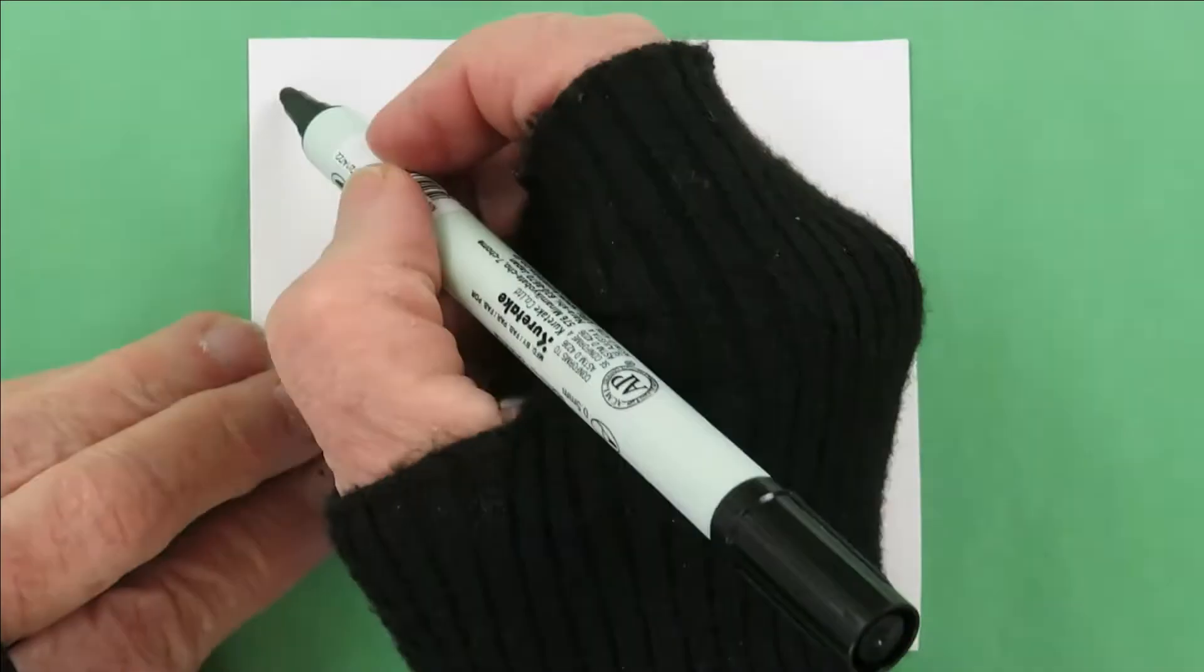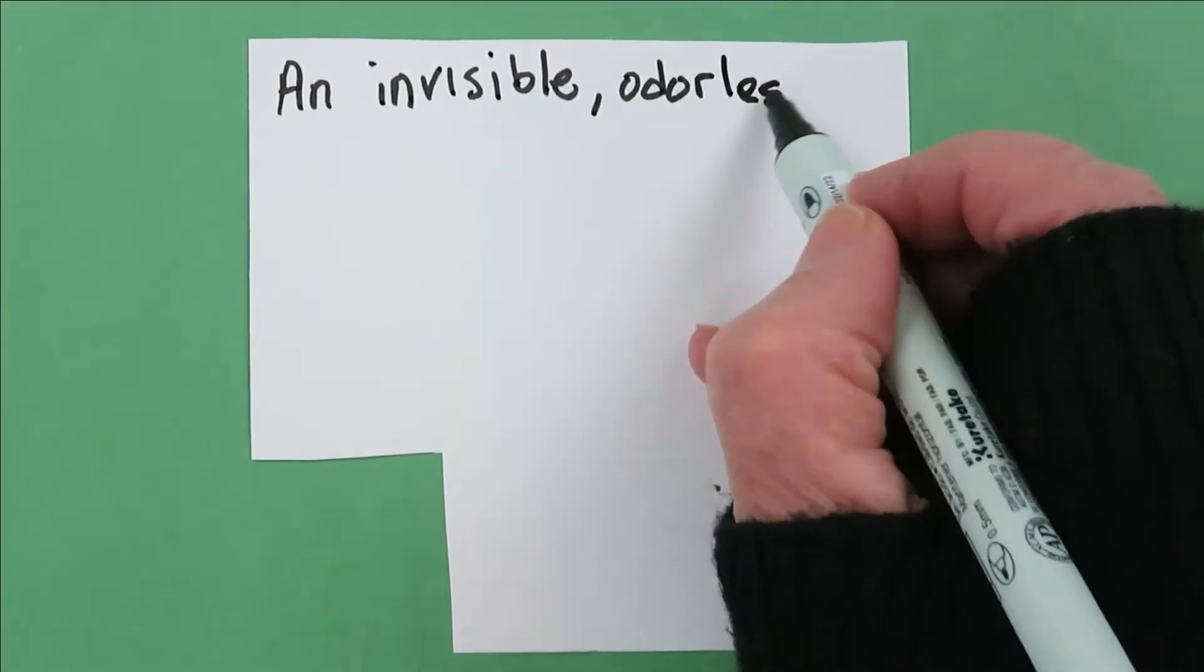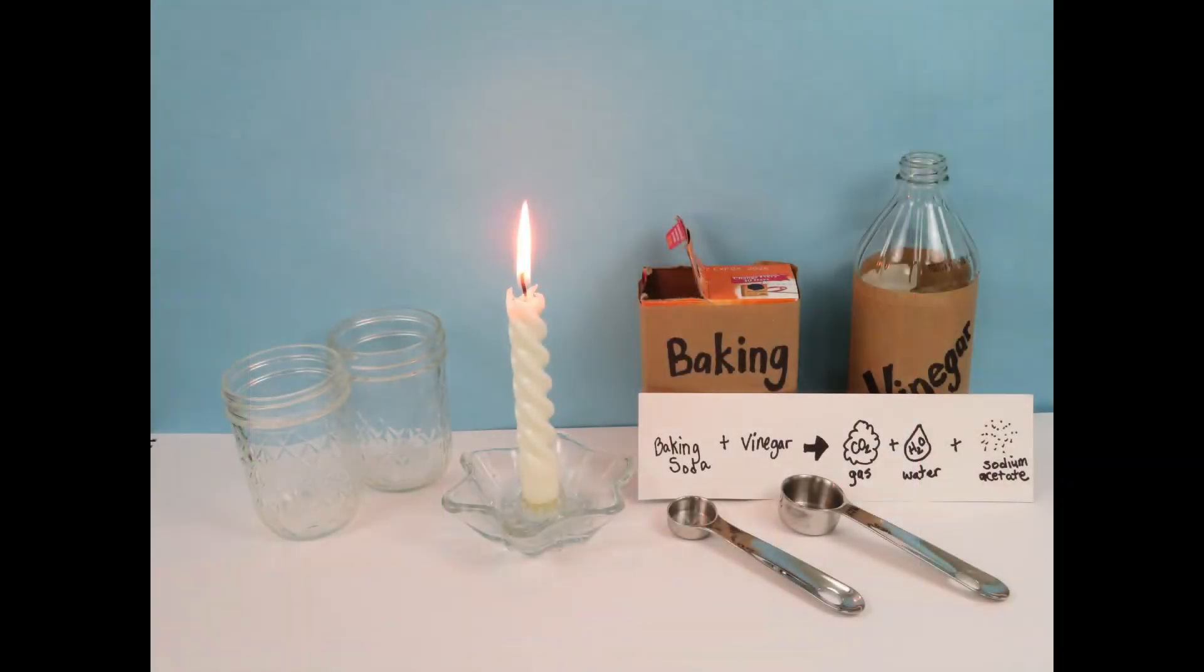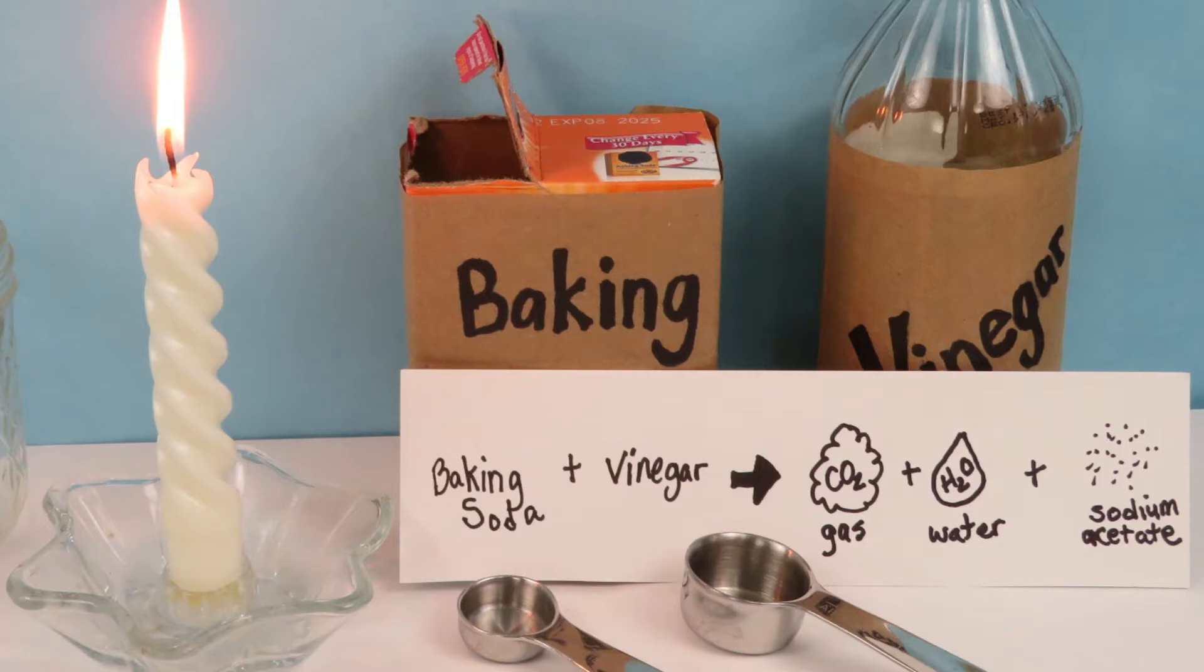Okay, the second thing you need to know about CO2 is that it's an invisible odorless gas. It's easy to make in your kitchen. Baking soda plus vinegar react to make CO2 gas, water, and sodium acetate, a dissolved solid. Try this.